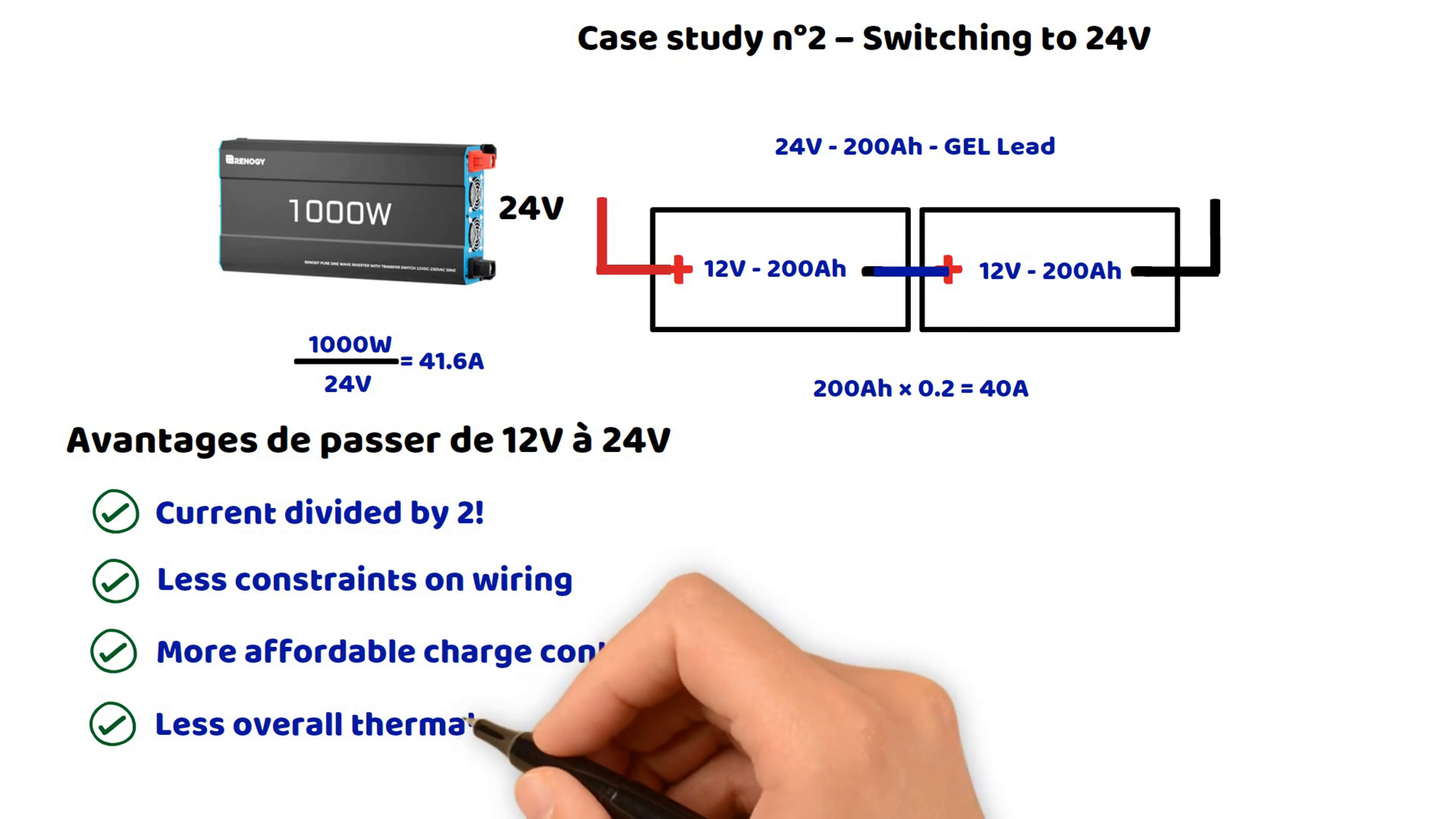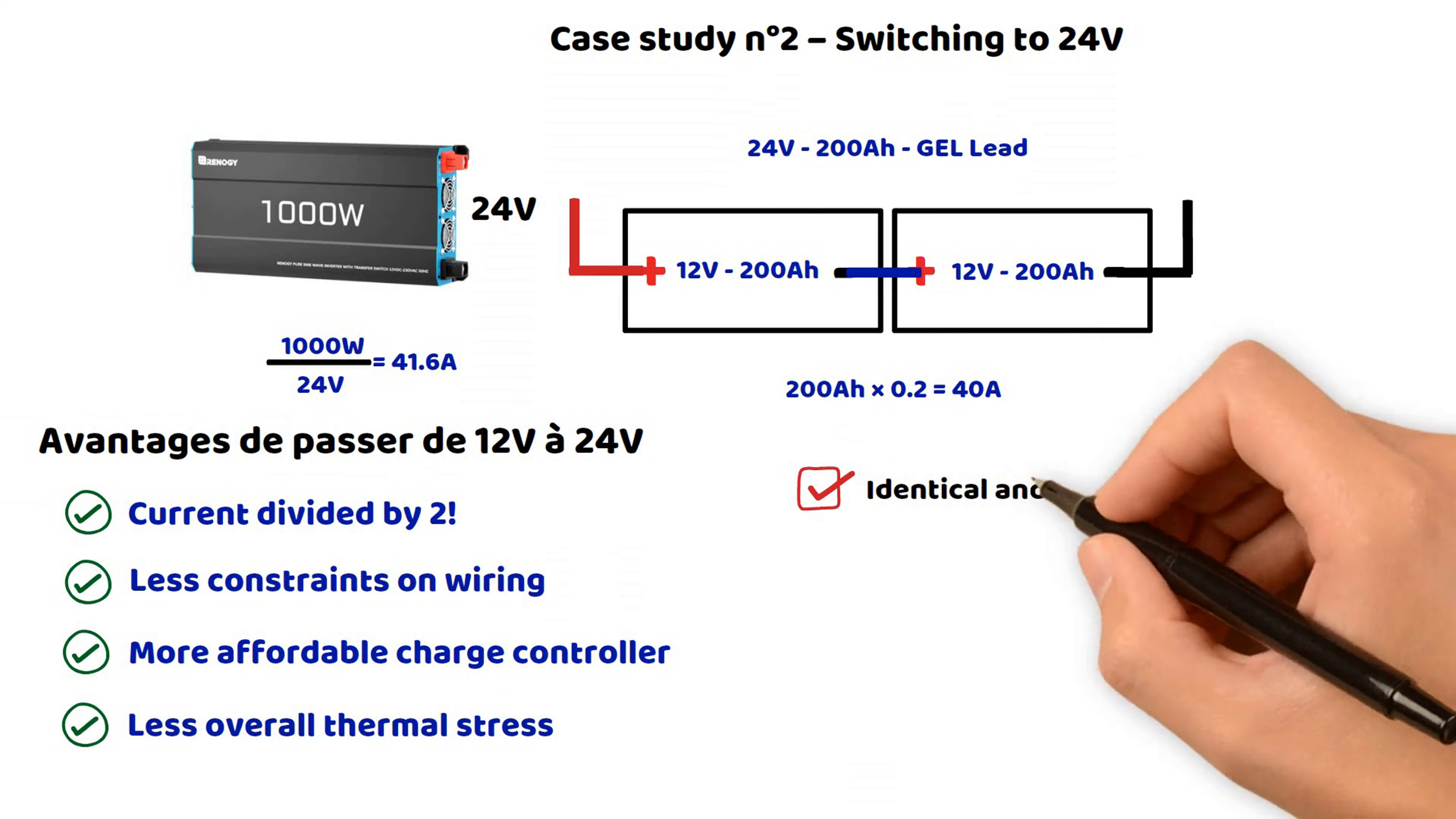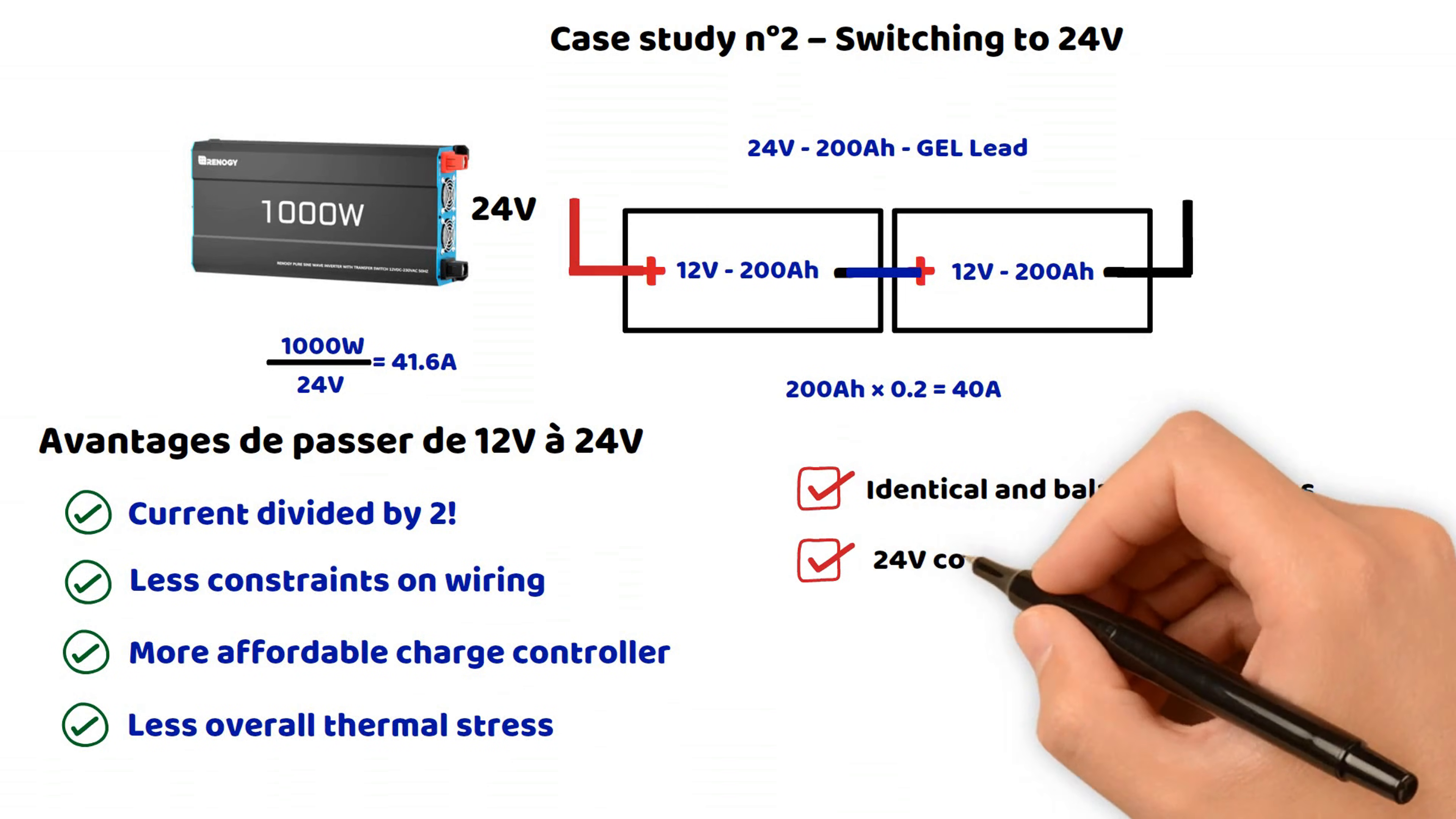But be careful. The batteries must be strictly identical and balanced before connecting them in series. And you must ensure that all components—inverter, controller, protections—are compatible with 24 volts.